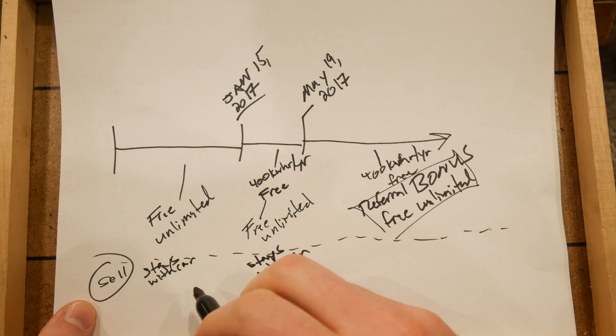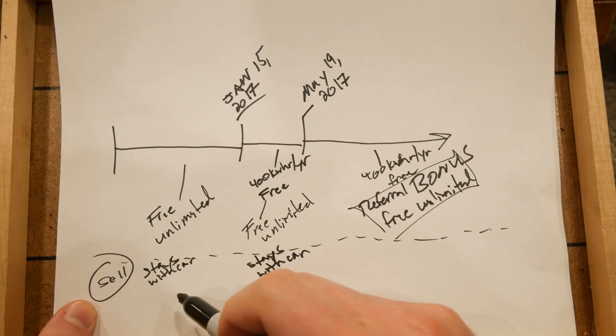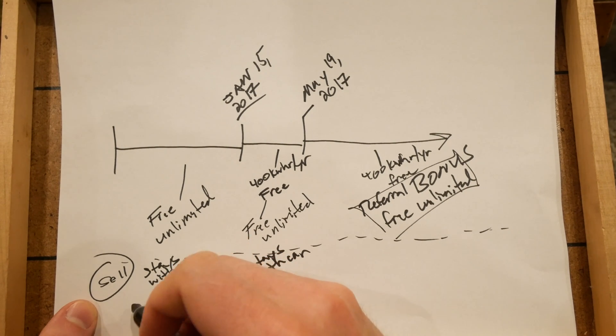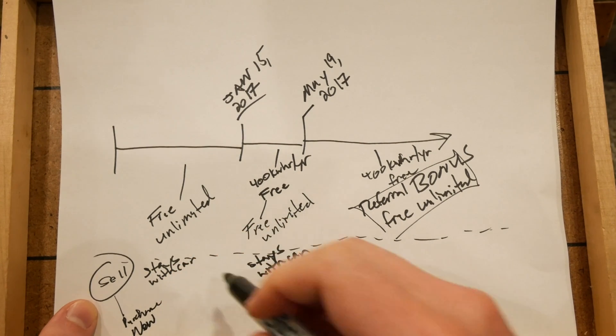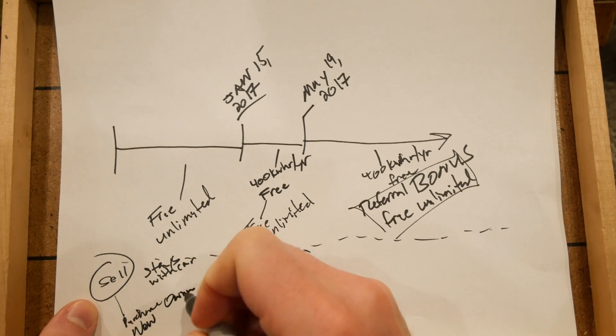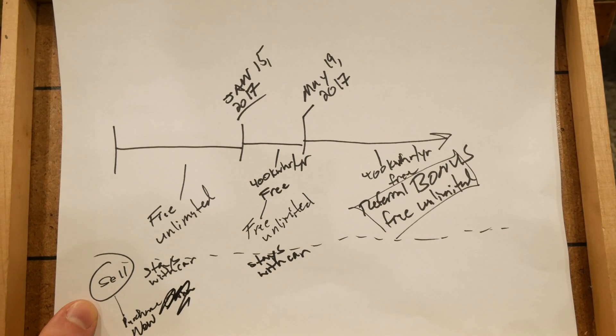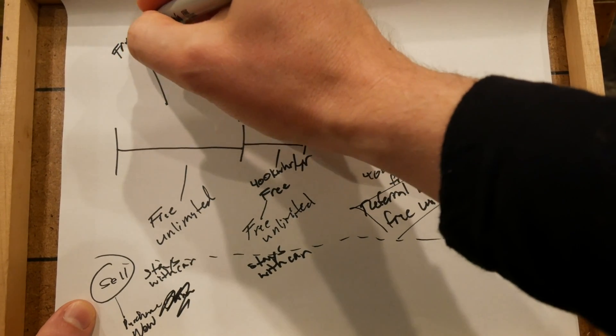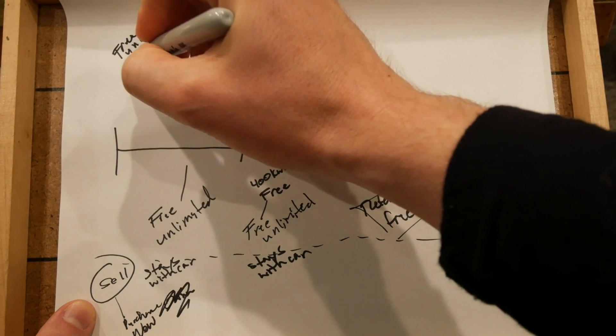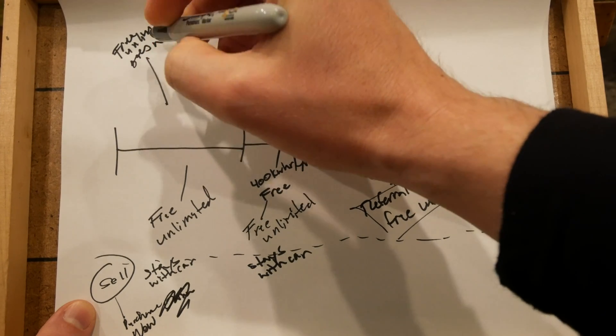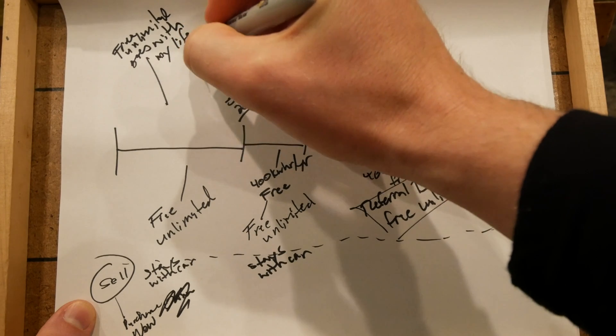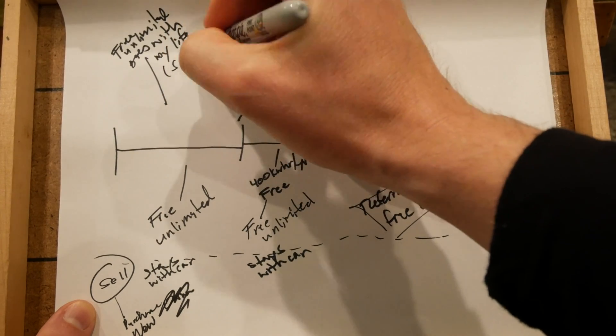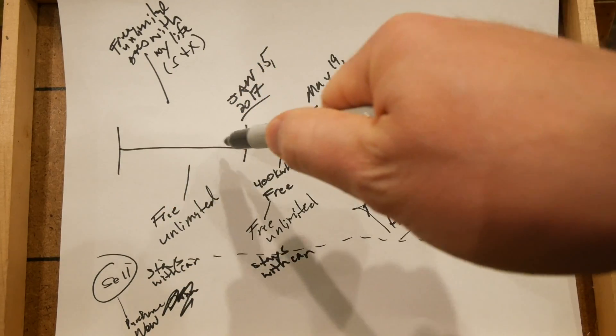A difference here though, I don't know if there's a difference. I'll have to confirm this. But I know for my car, it says in my Tesla ownership window, if I sell my car and then I purchase a new one. So people in this window.